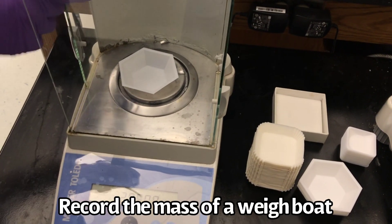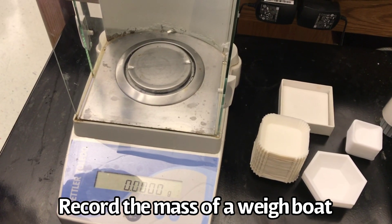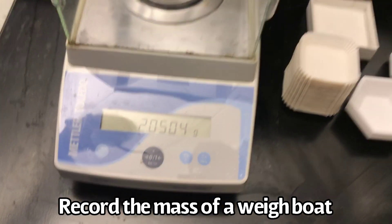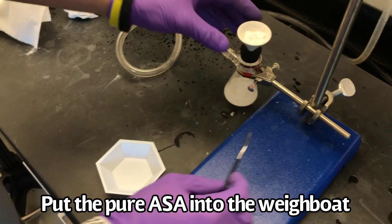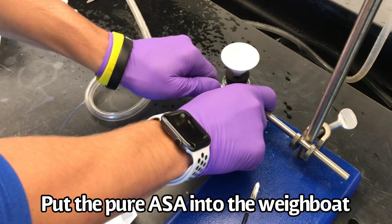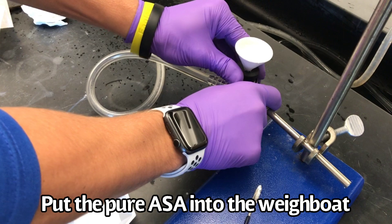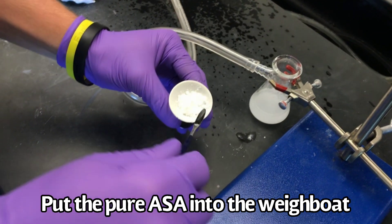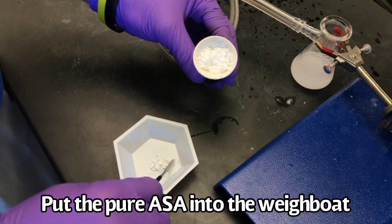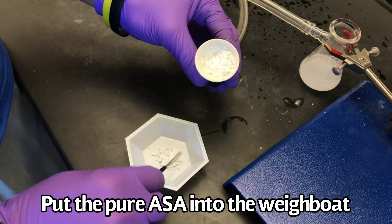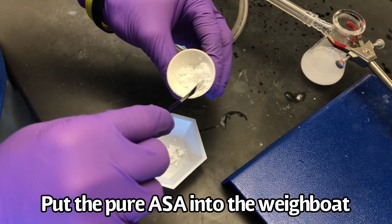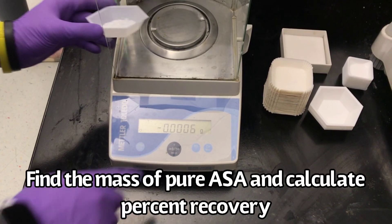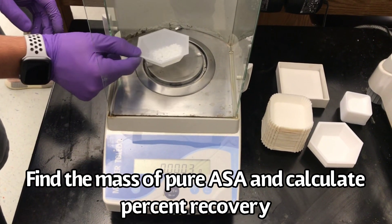Next, pre-weigh a weigh boat. Next, put the pure acetylsalicylic acid into the weigh boat. Find the mass of the pure acetylsalicylic acid and calculate percent recovery.